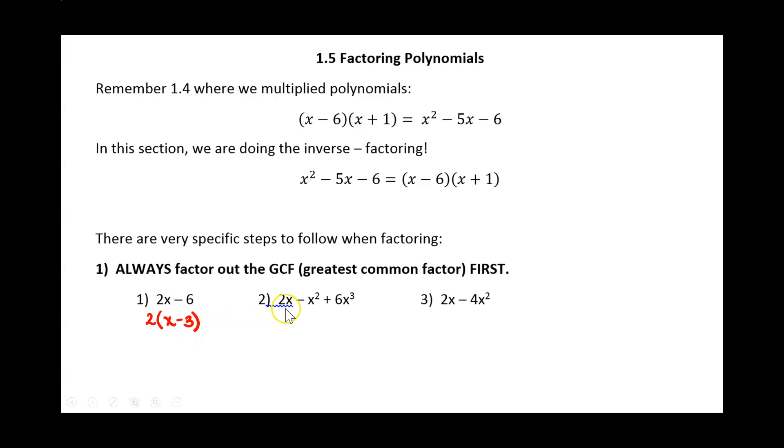Alright, look at the next one. The next one has three terms, so it's a trinomial. And if I look at what every one of those terms have in common, each of them has an x. And so if I factor out that x, what I have left: 2x divided by x is 2, negative x squared divided by x is negative x, and 6x cubed divided by x is 6x squared.